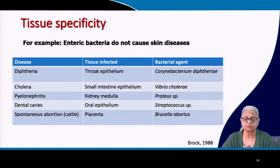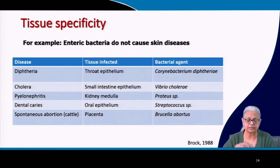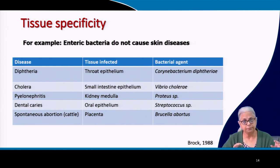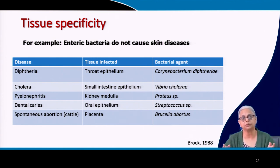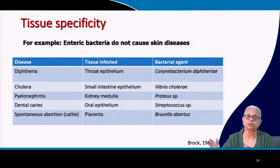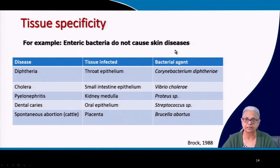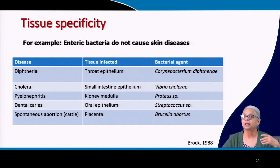Let's look at tissue specificity. We have many pathogenic organisms in our environment, but we are not vulnerable at all times to all of them — it depends on stress levels, age, and diet. Furthermore, a bacterium likely to cause a skin infection, if ingested, will not cause problems to any other organ of the body. Specific pathogens attack specific organs — this is tissue specificity. Enteric bacteria will not cause skin diseases: the virulent strain of E. coli present in water or food may cause a stomach upset but will not cause a skin disease.